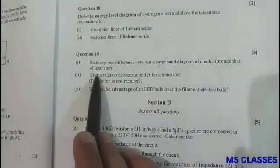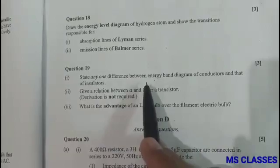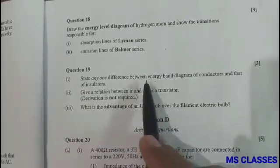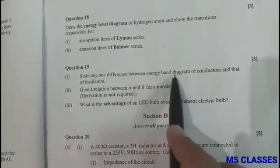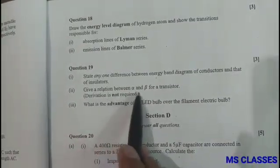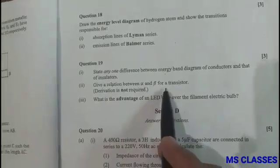In the insulator, energy gap is very high, that is greater than 3 electron volt, whereas in the conductor it's almost zero electron volt. Second, give a relation between alpha and beta for a transistor.